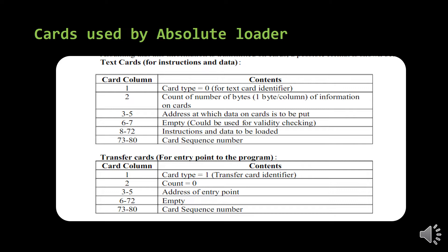The same column structure applies: 1 to 80 total columns, with 73 to 80 always indicating the card sequence number. A transfer card holds only the address where control should pass after loading all instructions. That memory location or address is stored at column numbers 3 to 5. So remember: address is always mentioned in column numbers 3 to 5 for both cards. Card type 0 means text card; card type 1 means transfer card. This is a very important exam question.